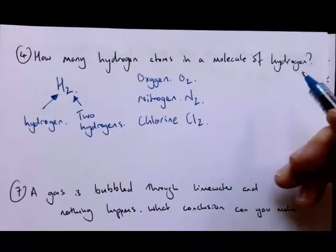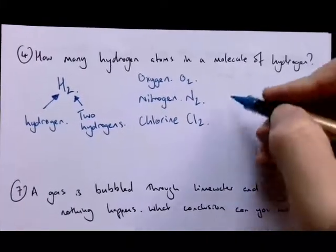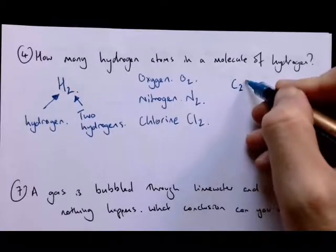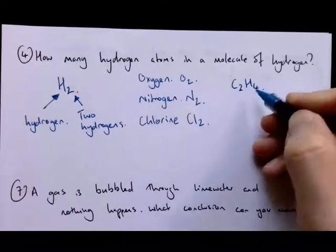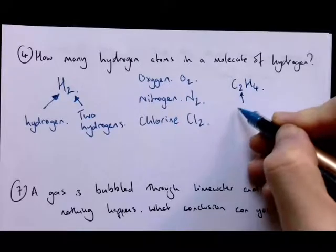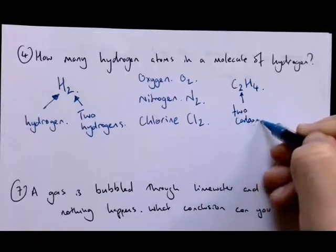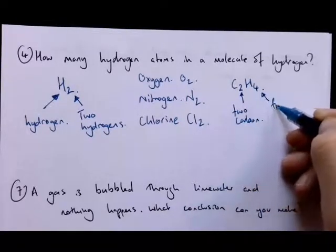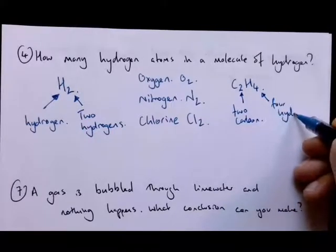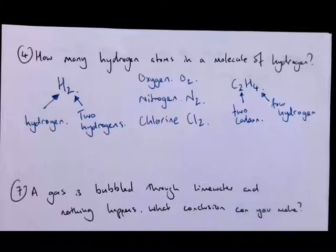And obviously, you can have things that are slightly more complicated. So if you had the molecule C2H4, then we know that there are two carbon atoms and there are four hydrogen atoms.